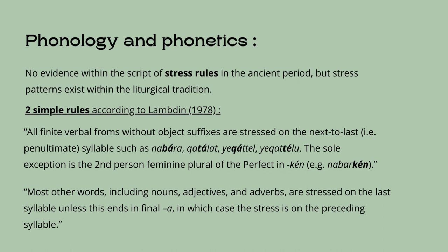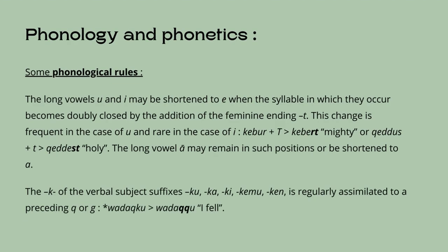There are a few special phonological rules. The long vowels u and e may be shortened to e when the syllable in which they occur becomes doubly closed by the addition of the feminine ending t. This change is frequent in the case of u and rare in the case of e. The long vowel ā may remain in such positions or be shortened to a. The k of the verbal subject suffixes — as in q, ka, ki, kim, ken — is regularly assimilated to preceding q or ge.